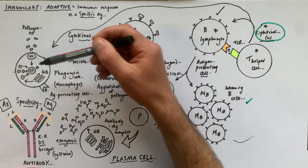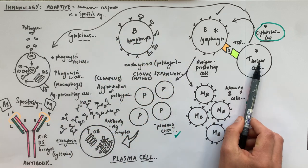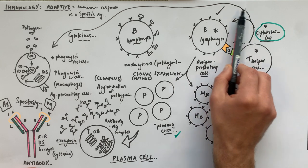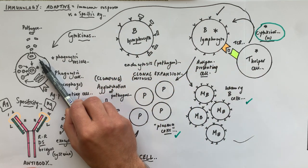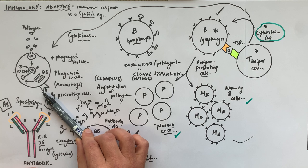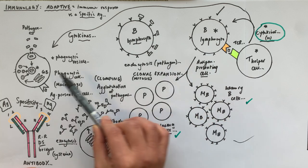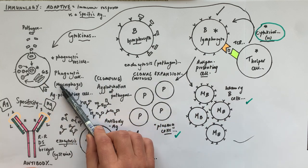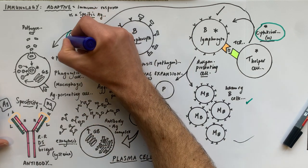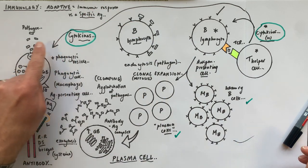Phagocytic cells are attracted to the infection site and can phagocytose the pathogen that has been clumped by the antibody. The T helper cell not only binds the presented antigen on the B cell and secretes cytokines to attract phagocytic cells, but also interacts with the presented antigen on the macrophage. So cytokines play two main roles: promoting clonal expansion of the B lymphocyte, and attracting more phagocytic cells.